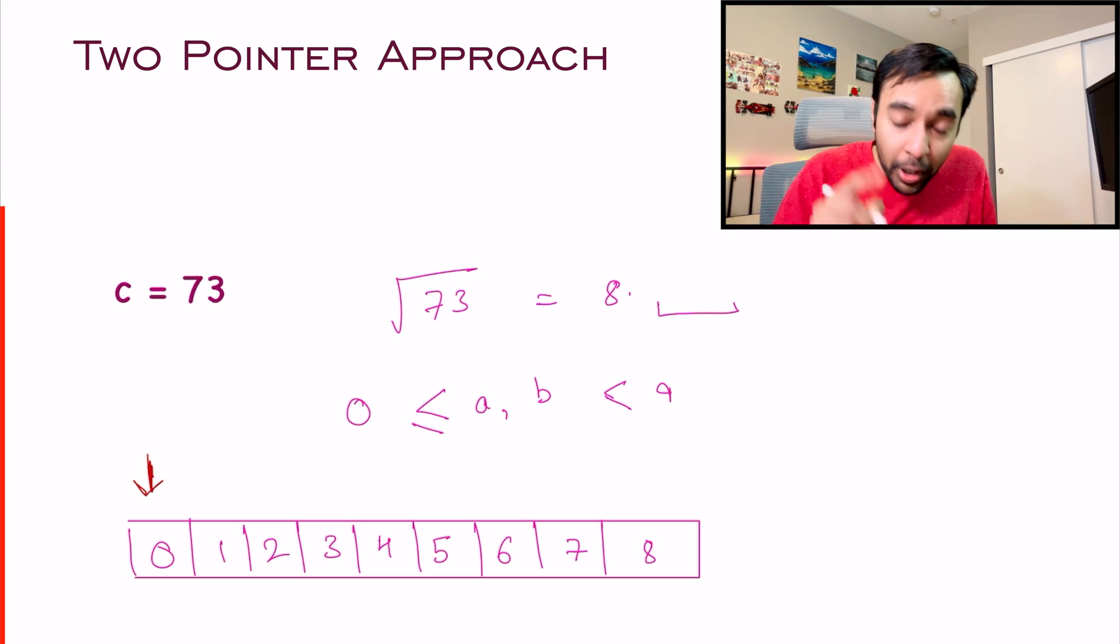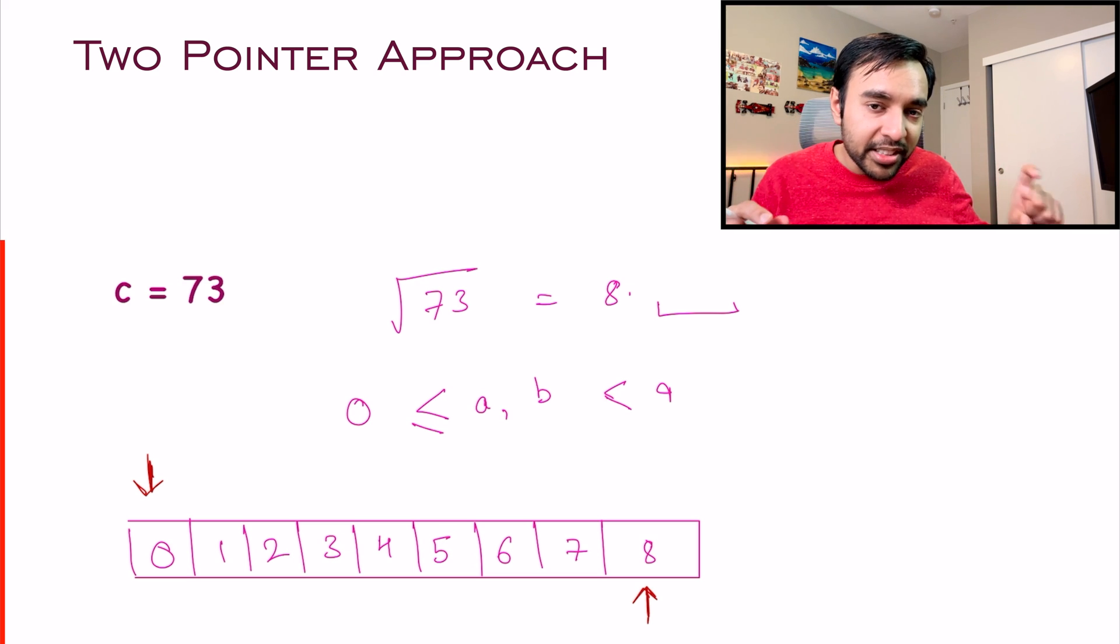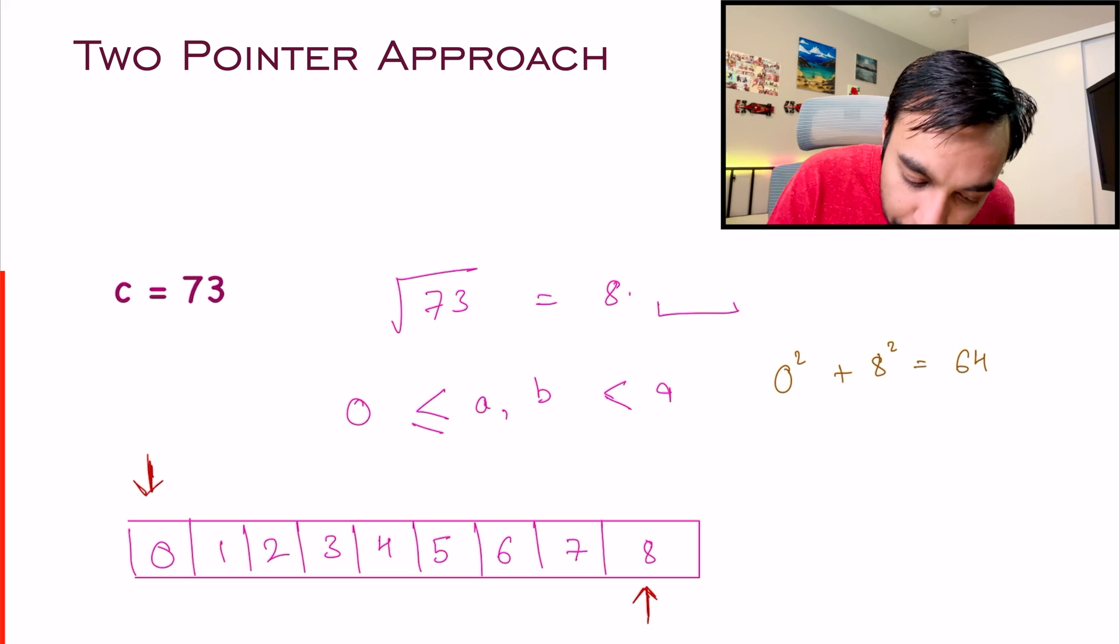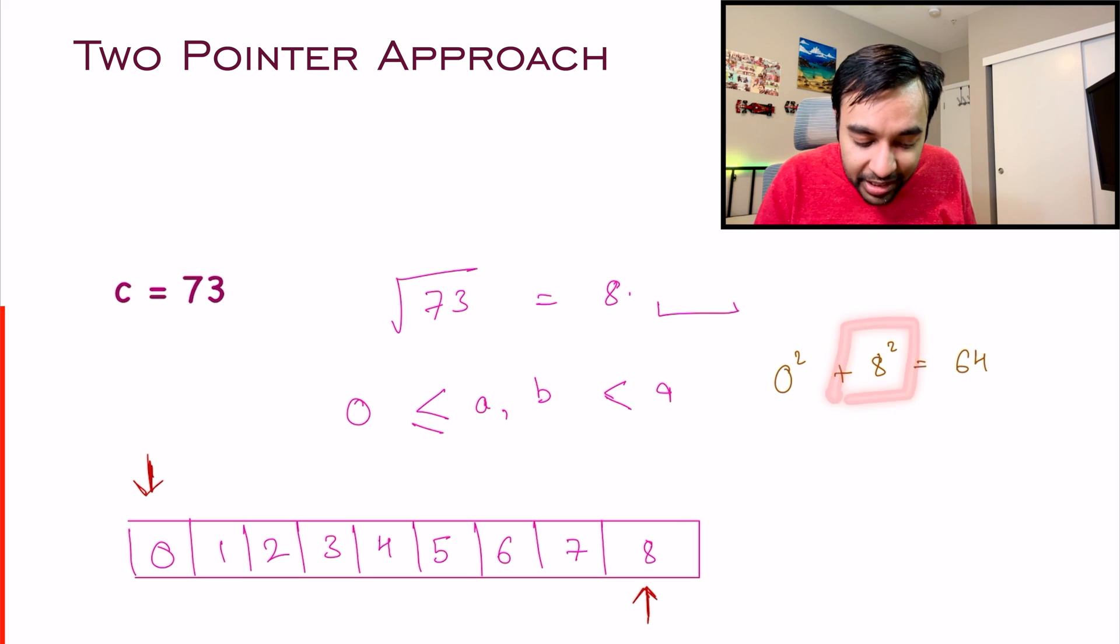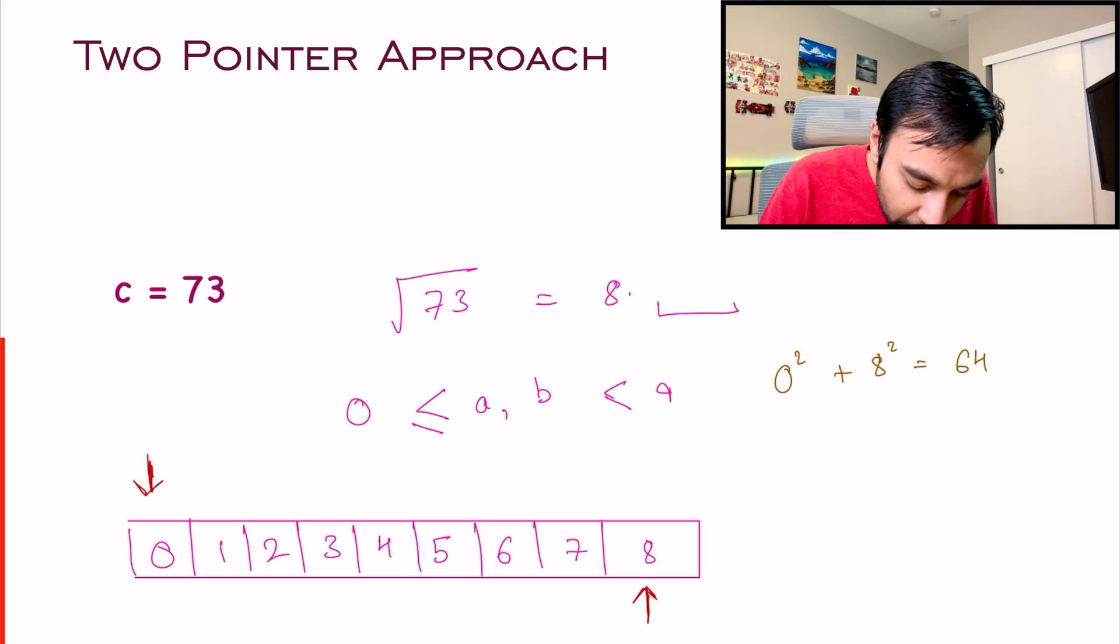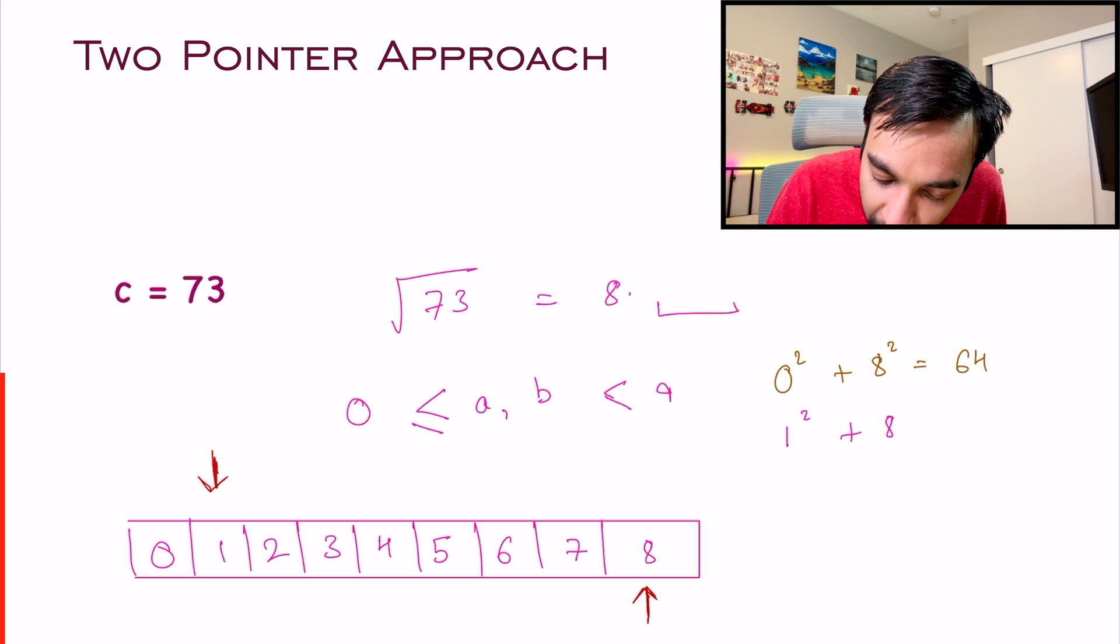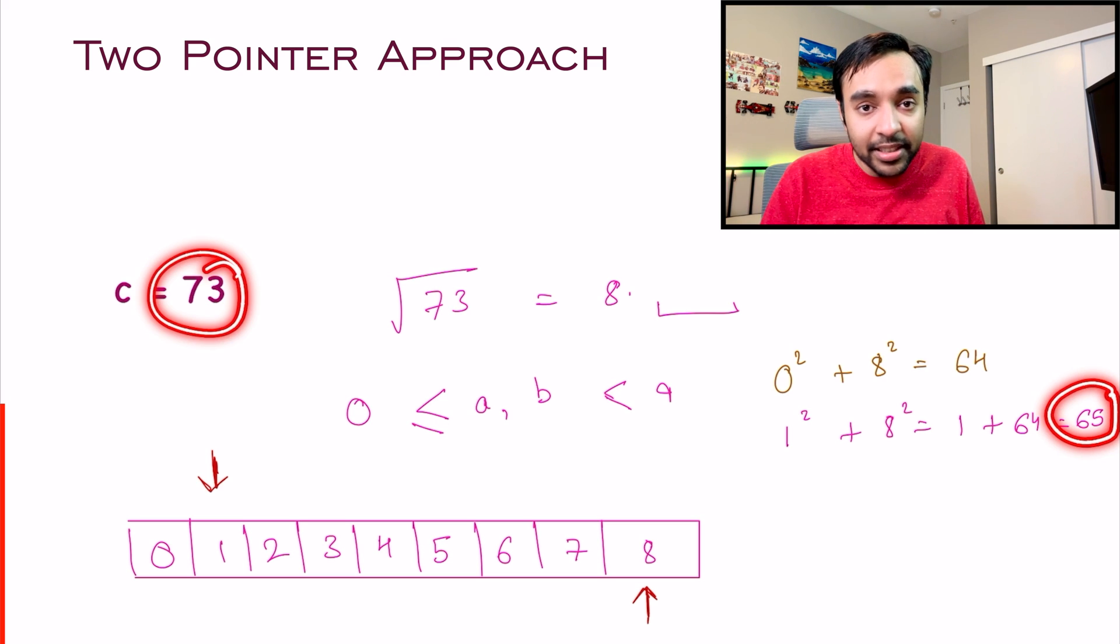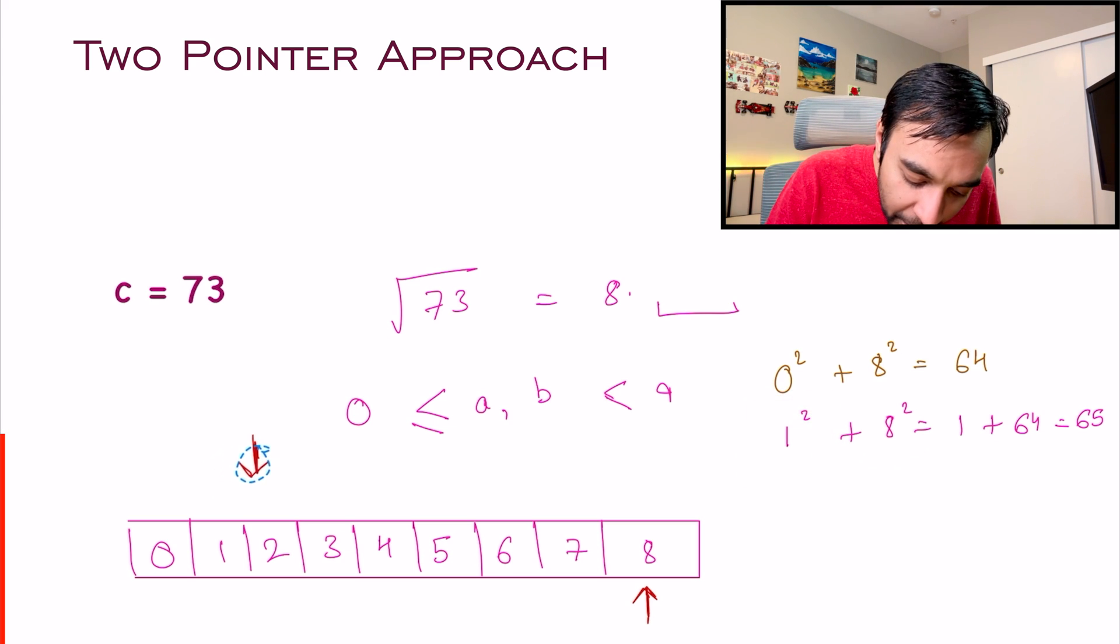You will have your first pointer pointing at the first number and your second pointer pointing at the last number. And then, what do you do? You will square both of these numbers and add them up. So over here, I have 0² + 8² and that gives me 64. Notice that 73 is greater than 64. Now, I cannot have a value greater than 8 because this is my limit, right? But I can use a different smaller value. So that is what I do. I will increment my left pointer. And now, what do I get? This time, I will get 1² + 8². So 1 + 64. And now, I get 65. So once again, you see, 73 is greater than 65. I cannot go higher than 8, but I can increment this value. So what I will do is, I will increment this left pointer by one step ahead.